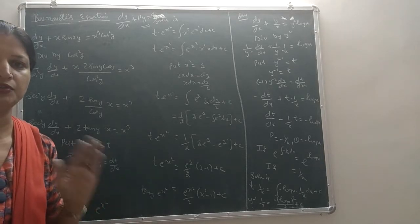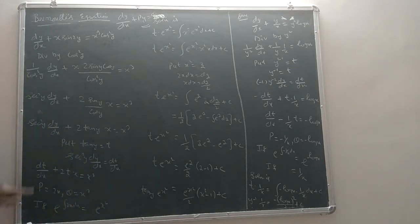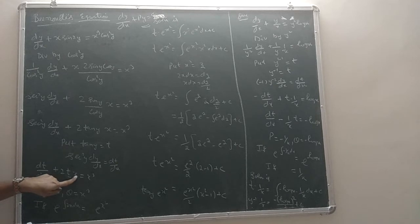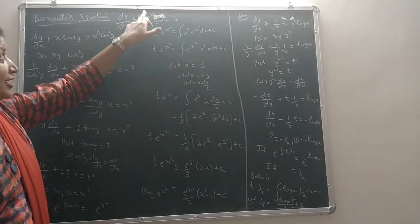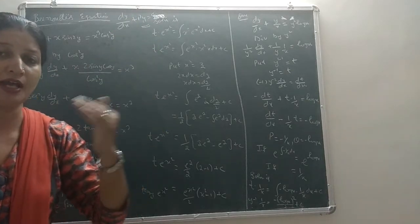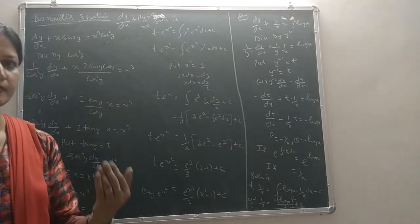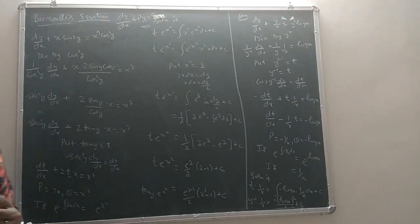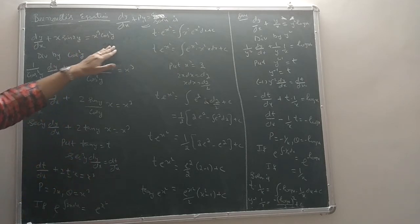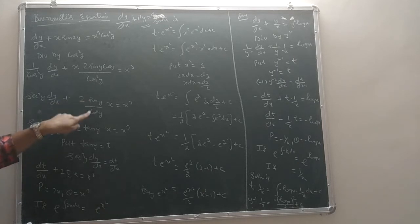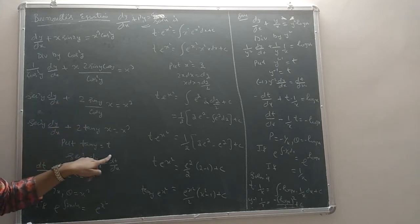This is a linear equation, but linear in t. So dt/dx is our derivative term, the coefficient of t is 2x, and the right-hand side is x³. We have successfully substituted tan(y) = t to reduce it to a linear form.